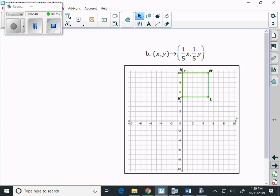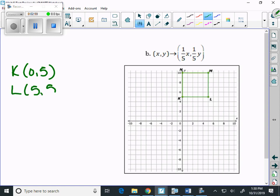If we look at our ordered pairs. K is 0, 5. L is 5, 5. M is 5, 10. And N is 0, 10.